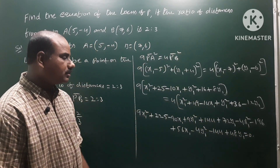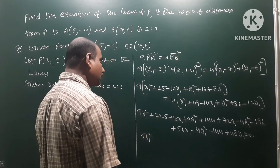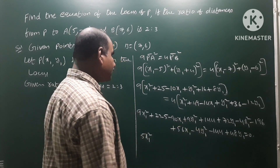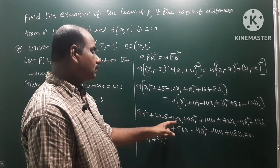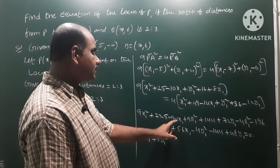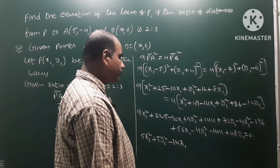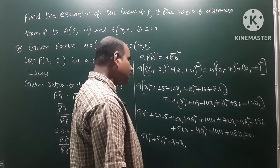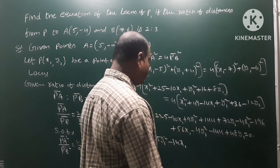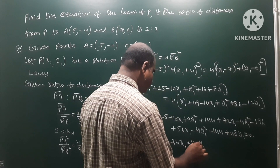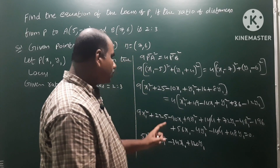Bringing all terms to one side: 9x1 square minus 4x1 square gives 5x1 square. 9y1 square minus 4y1 square gives 5y1 square. X terms: minus 90x1 plus 56x1 gives minus 34x1. Y terms: minus 72y1 plus 48y1 — wait, plus 120y1. Constant terms: 225 plus 144 minus 144 cancel, giving 225 minus 196 equals plus 29.